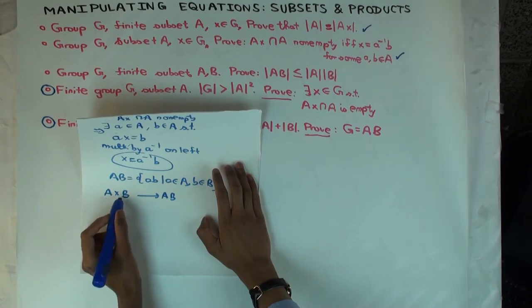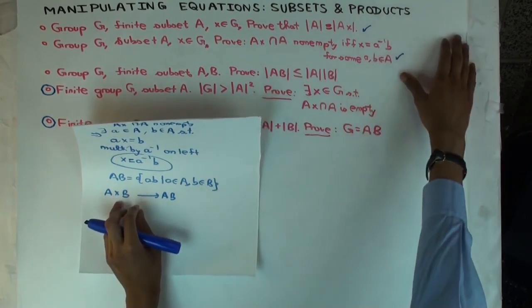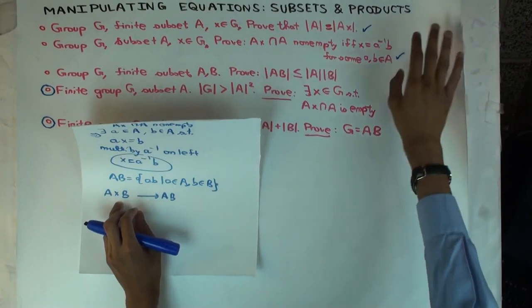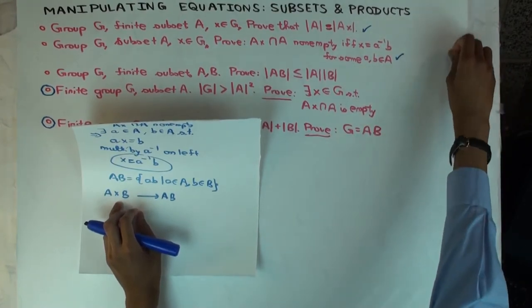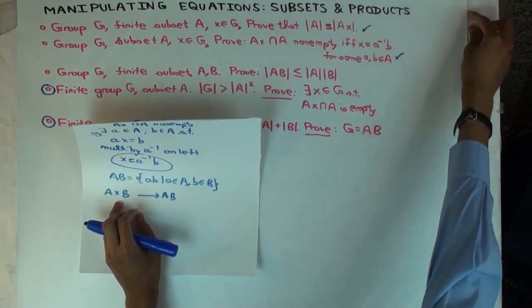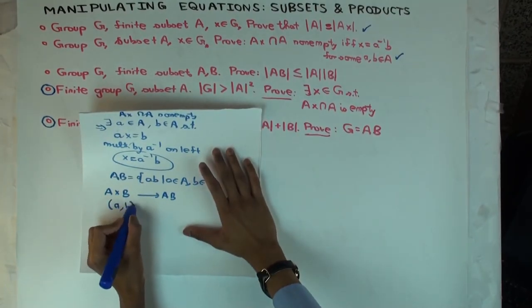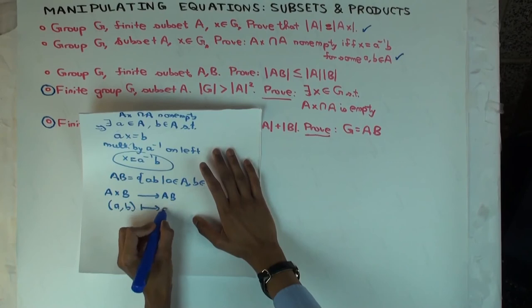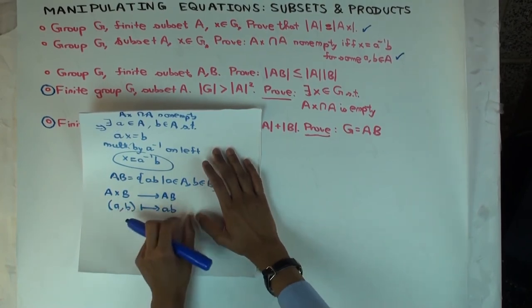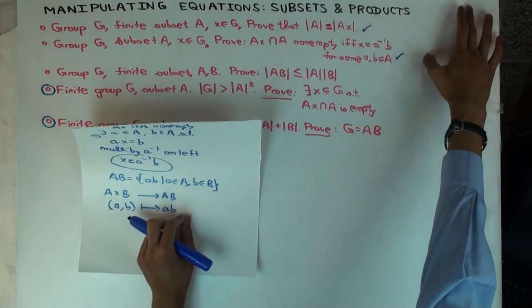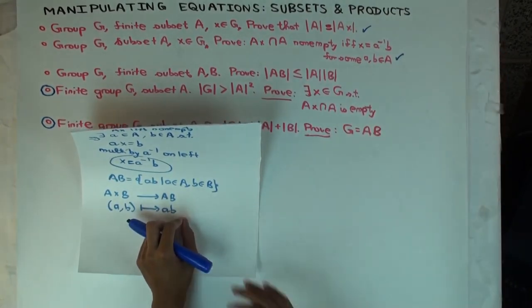What are the elements of A cross B like? A cross B just means pairs of elements in A and B. They're a comma b. They aren't products, they're just a comma b map to ab. So this map is just a comma b goes to ab. You just take two elements, maybe they're the same, and you multiply them. Now, what can you say about this map? Is it well defined? Does it go inside AB?